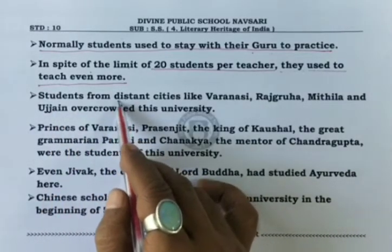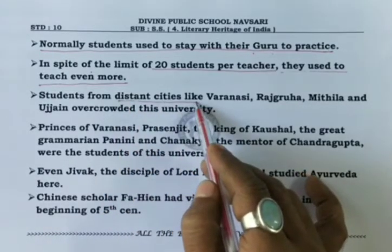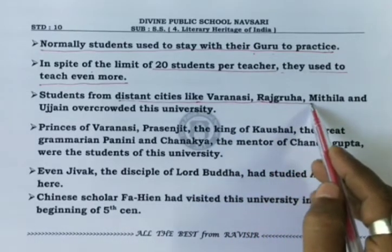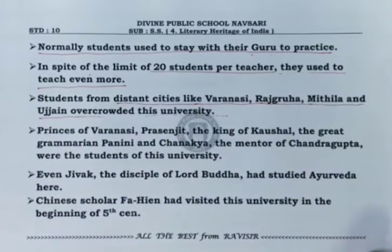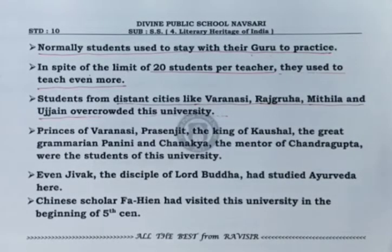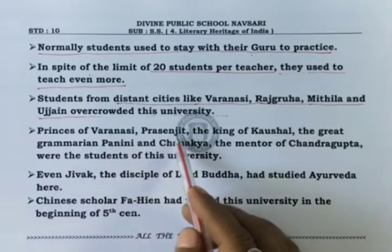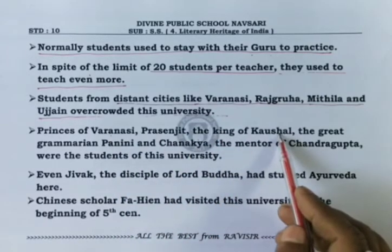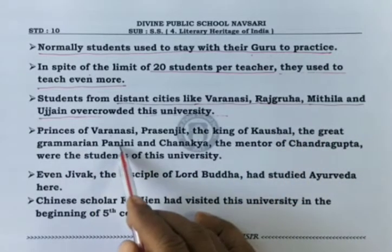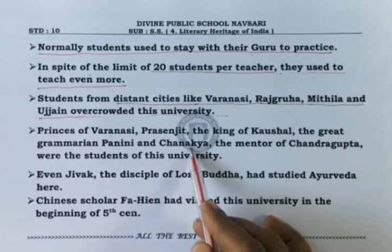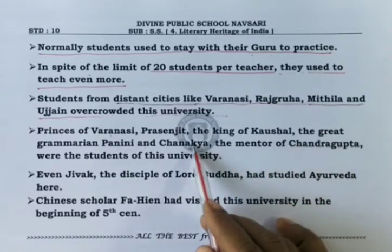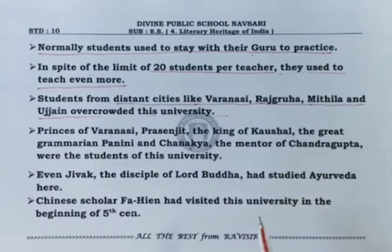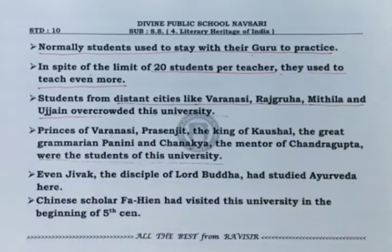Students from distant cities such as Varanasi, Rajguru, Mithila, and Ujjain used to come to study at this university, which became overcrowded. Notable alumni include the Prince of Varanasi, Prasenjit the king of Kaushal, the great grammarian Panini, and Chanakya — also known as Kautilya — who was the mentor of Chandragupta Maurya. These were all students of this university.